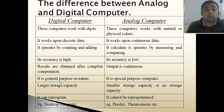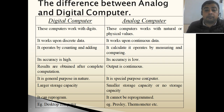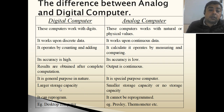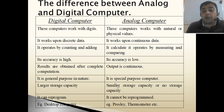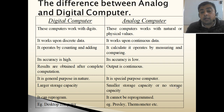Digital computers are used for general purpose, but analog computers are used for only specific purpose. Digital computers have larger storage capacity, whereas analog computers have smaller storage capacity, or some analog computers may not have storage capacity at all.